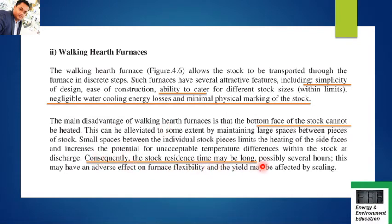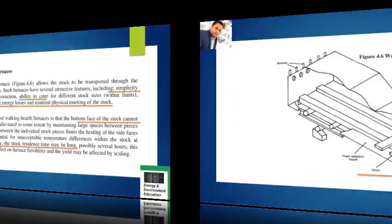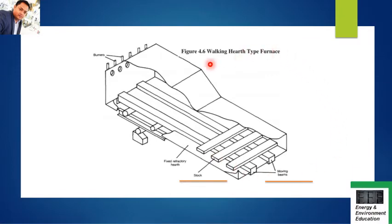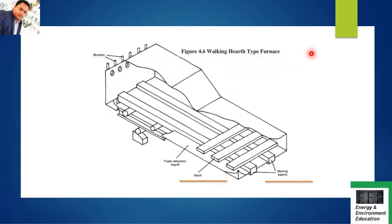Another disadvantage of the walking hearth furnace is that the stock residence time may be long, requiring too much time for heating. This picture shows the walking hearth type furnace. As explained, the stock is not pushed by itself - the beam on which the stock is placed is moving inside the furnace, and ultimately the stock gets heated up. You can see the moving beams, the stocks piled up on them, and the burners inside the furnace. They may ask you to explain this entire diagram and briefly explain the working principle of the walking hearth type furnace.